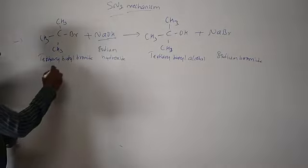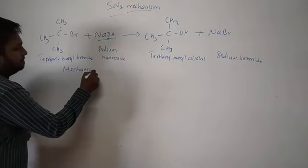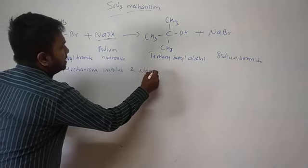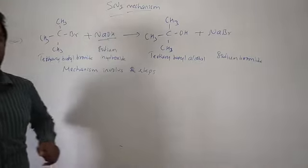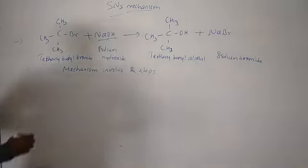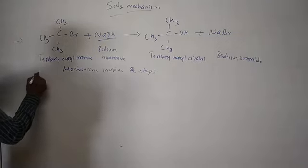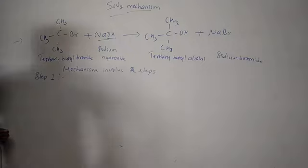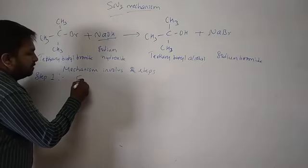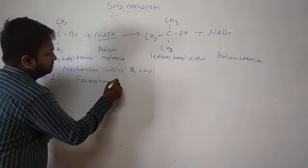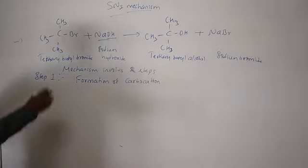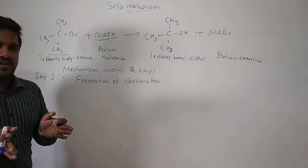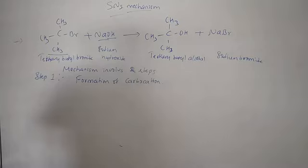Now let us understand the mechanism. This mechanism involves two steps and it is a unimolecular nucleophilic substitution reaction mechanism. Step one is the formation of a carbocation. Tertiary butyl bromide undergoes ionization, breaking the C–Br bond to form a carbocation.